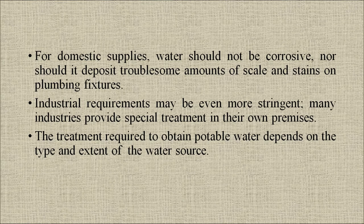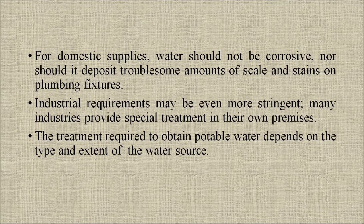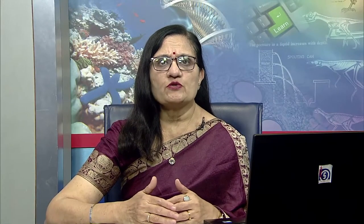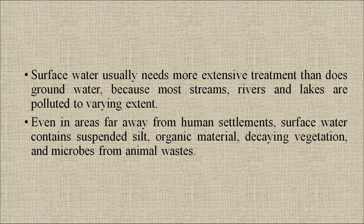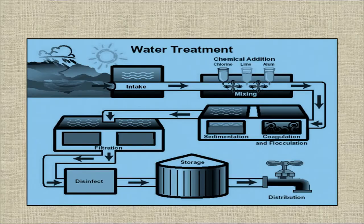Industrial requirements may be even more stringent; many industries provide special treatment in their own premises. The treatment required to obtain potable water depends on the type and extent of contamination of the water source. Surface water usually needs more extensive treatment than groundwater because most streams, rivers and lakes are polluted to varying degrees. Even in areas far away from human settlement, surface water contains suspended silt, organic material, decaying vegetation and microbes from animal waste.